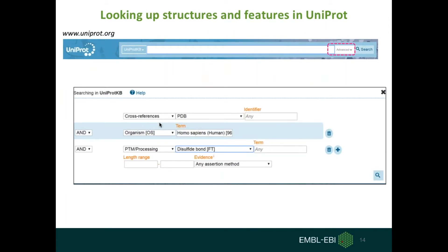If you want to look up structures and their features in UniProt, on the UniProt main page you have the option of advanced search on the top right hand side. If we click on advanced search, we can choose various options. For example, if you want to look for UniProt entries which have structure in PDBE, those entries should be from human, and those entries should have a disulfide bond. There are numerous options you can choose to customize your own search, and then clicking the search button gives results in a table form.